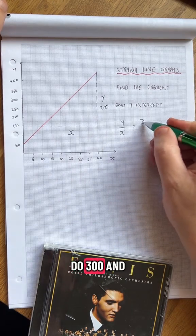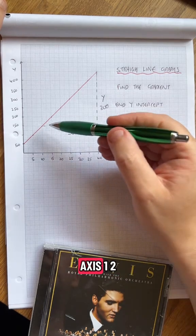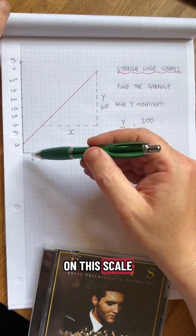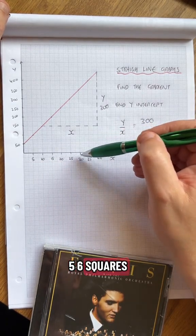And then the length of this line on the x-axis is 1, 2, 3, 4, 5, 6 squares. On this scale, 6 squares is 30.